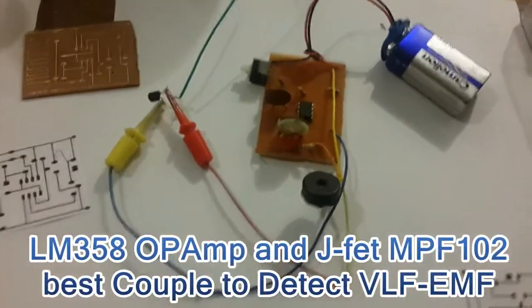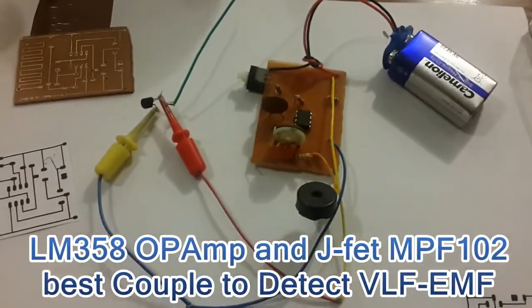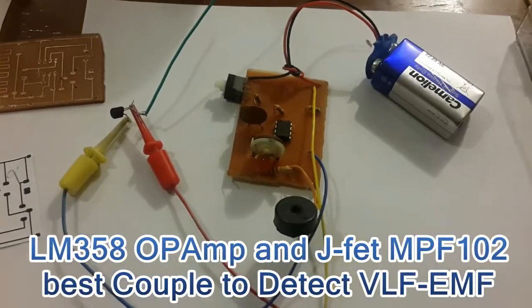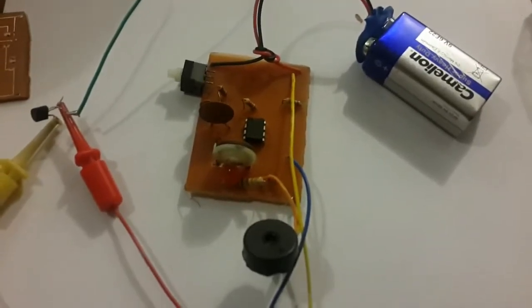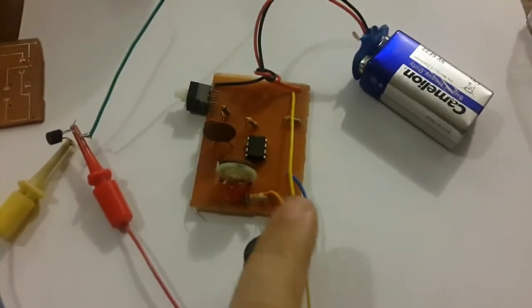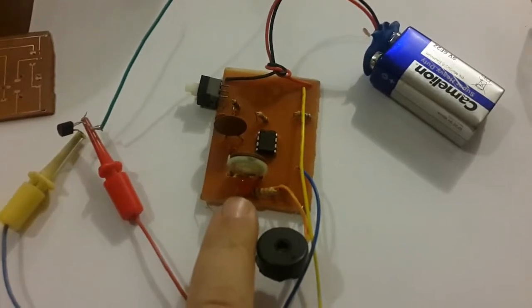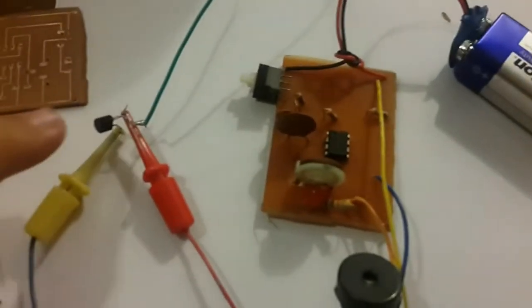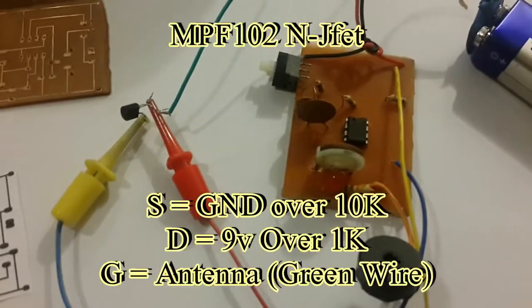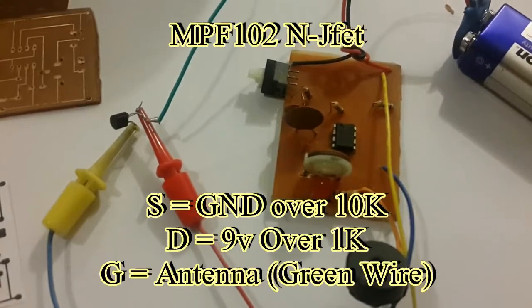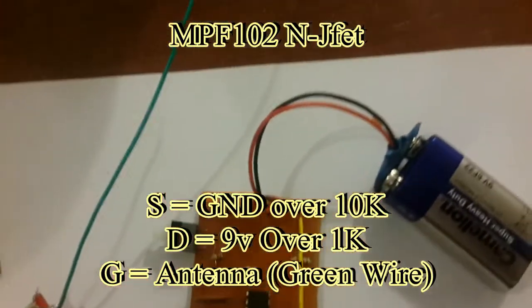Hello guys, thanks for clicking this video. Look at this project: 9 volt battery, operational amplifier connected to the N-channel JFET transistor MPF102, and finally it is connected to a short copper wire.